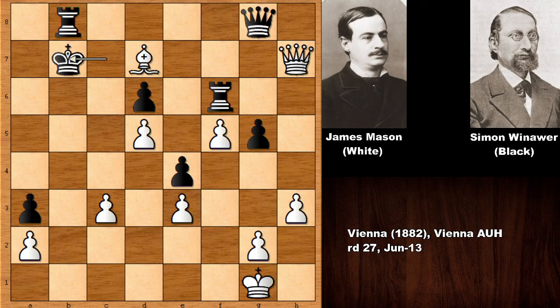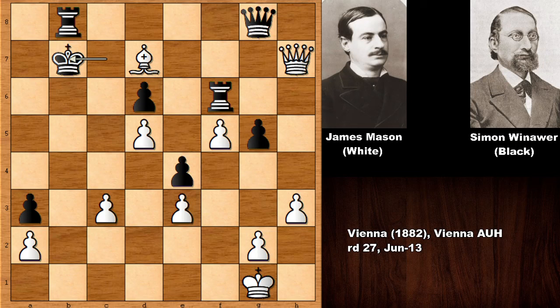After king takes on b7 — rook takes doesn't work because that simply loses the queen, and if king takes bishop, the poor rook coordination means checking the king and forking the king and rook. So Mason played bishop takes on b7 and then rook to b7. But why did Mason sacrifice the whole rook? What was his purpose? Can you see the next aesthetically beautiful move of James Mason?